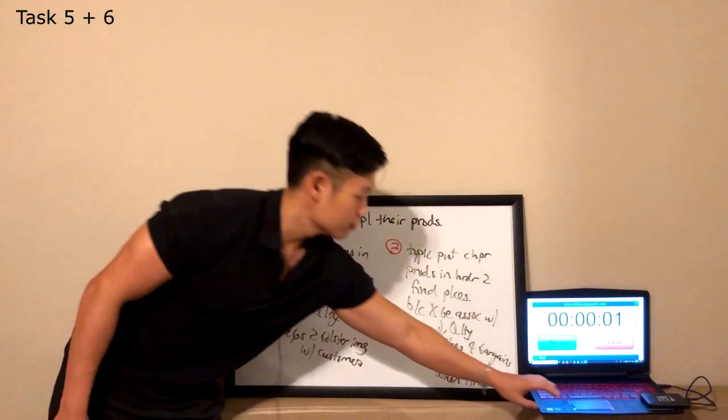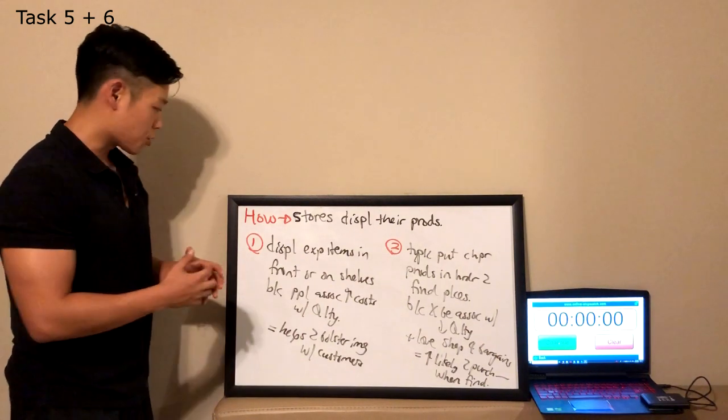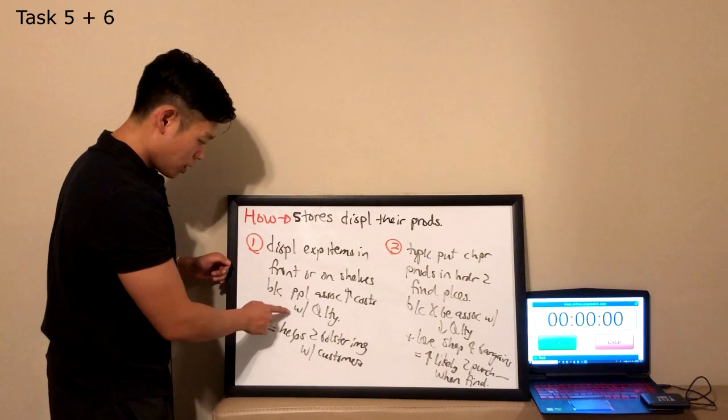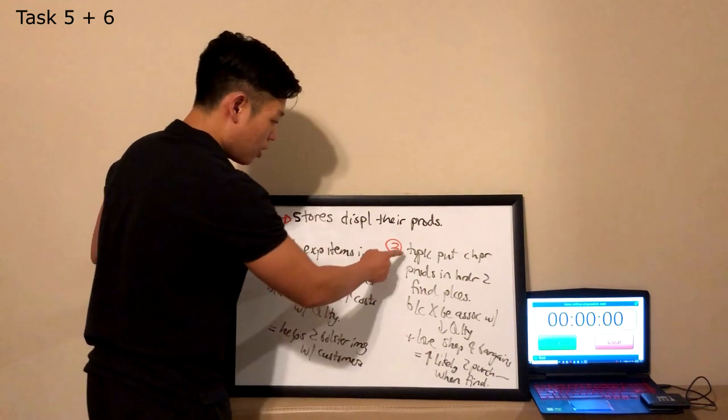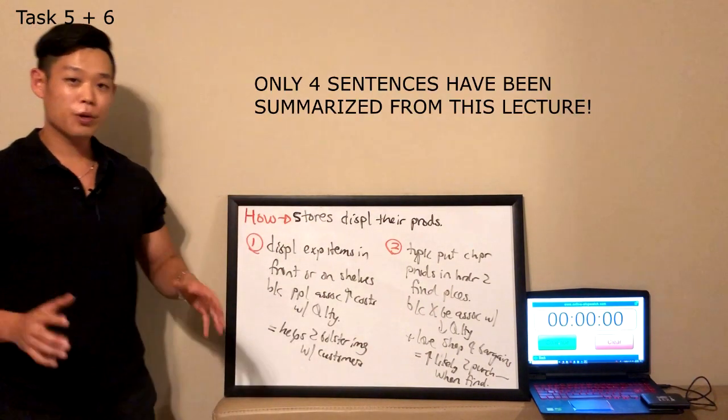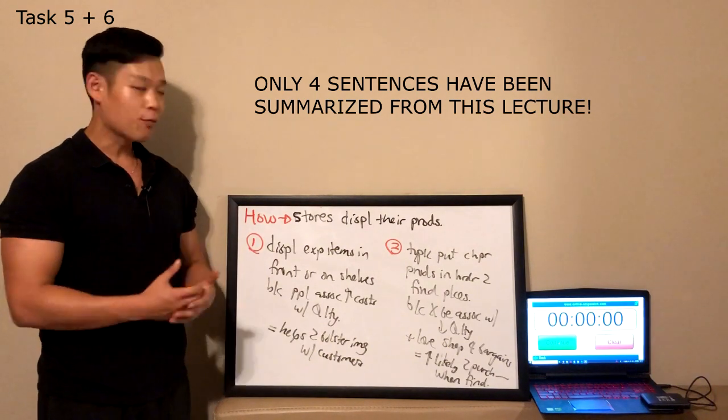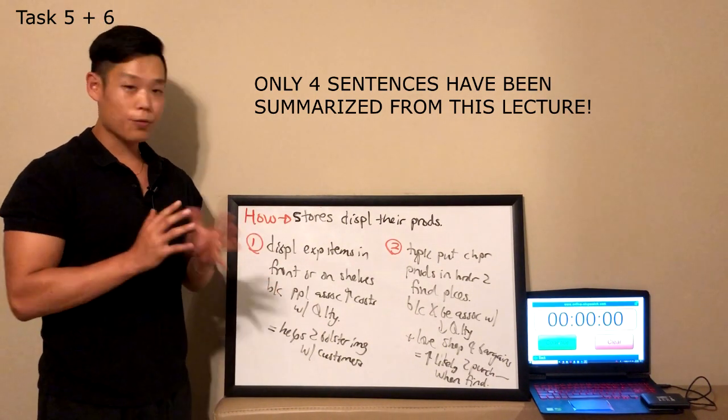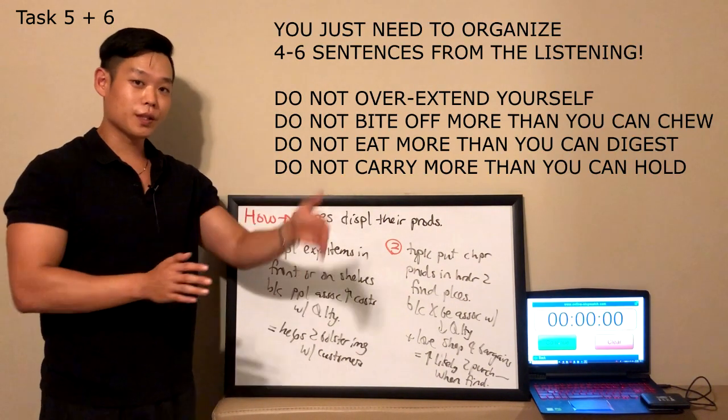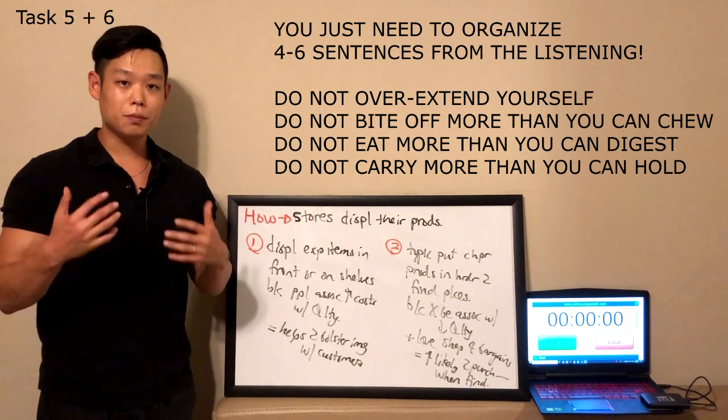All right, now let's count how many sentences I organized from this lecture. One, it's long but one, two, three, and four. Okay, so once again, four pretty extensive and lengthy sentences. So let's say that I organized five or six sentences from this lecture all together. Don't forget about that magic number: four to six. Four, five, or six sentences, that's all you need to spend 60 seconds of the integrated speaking time.